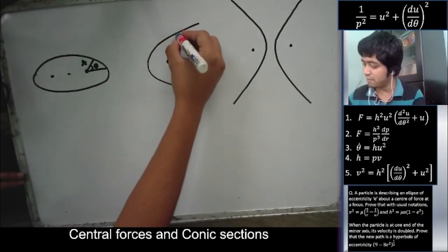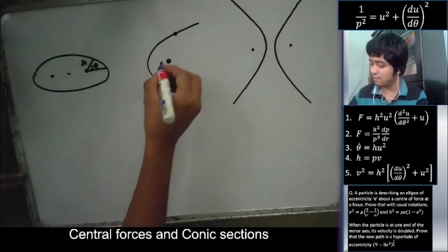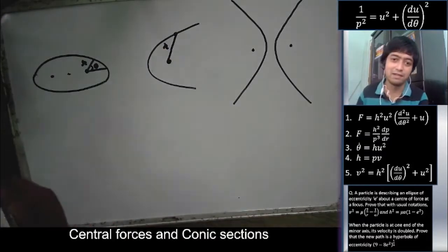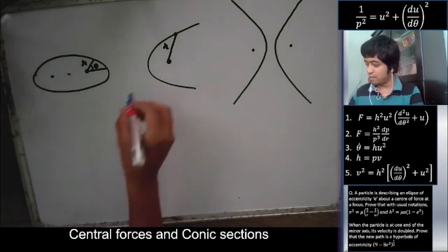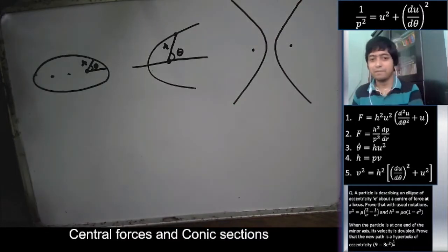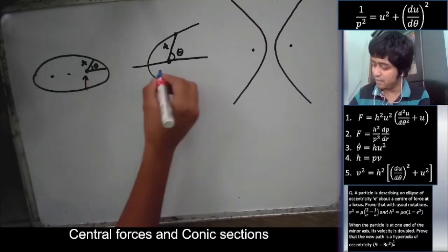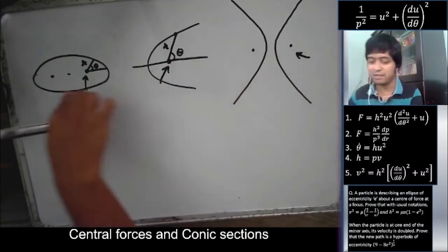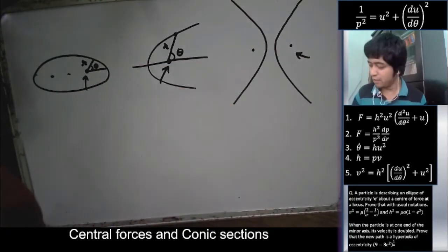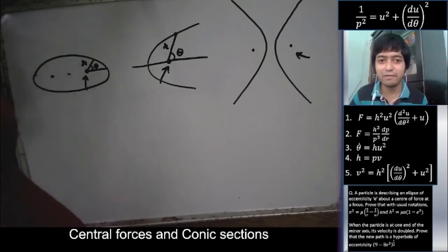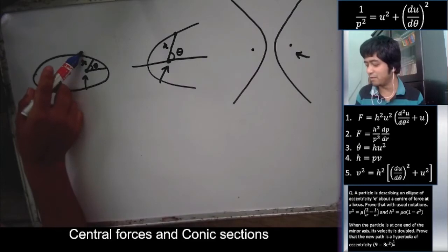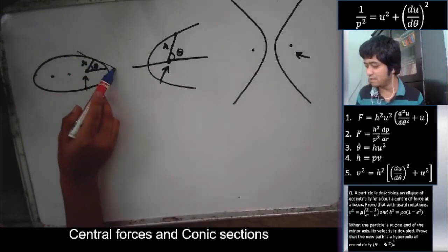If the particle is somewhere on the curve, we can draw R and θ accordingly. We are setting the center of force at the focus — we can set it at either focus; the equation doesn't change, or we just have to do a bit of modification. And what is P? Remember that P is the length of the perpendicular from the pole to the tangent. You will have to draw a tangent, and the perpendicular from the pole to that tangent gives you P.